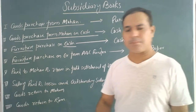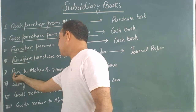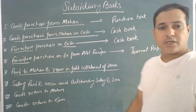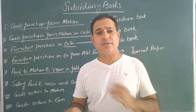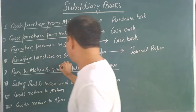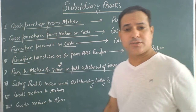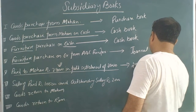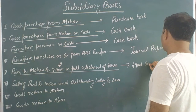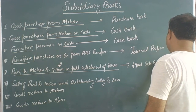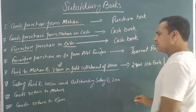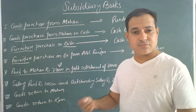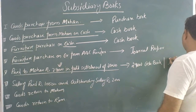The next transaction is: paid to Mohan 29,000 in full settlement of 30,000. He paid 29,000 in cash, so 29,000 will go to the cash book. The 1,000 discount that we receive will go to the general journal.